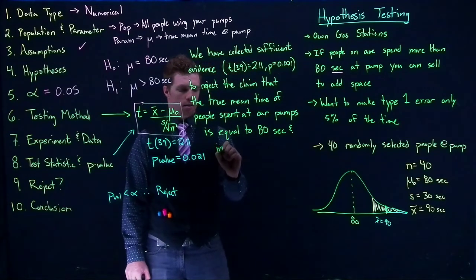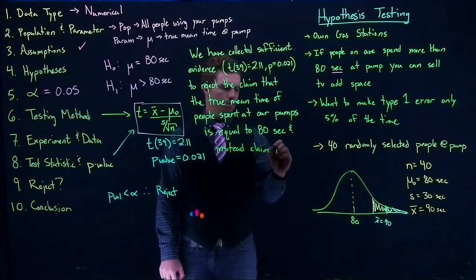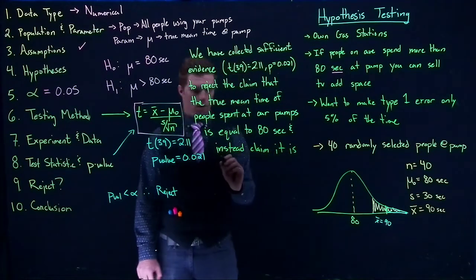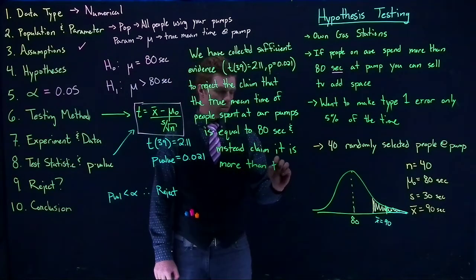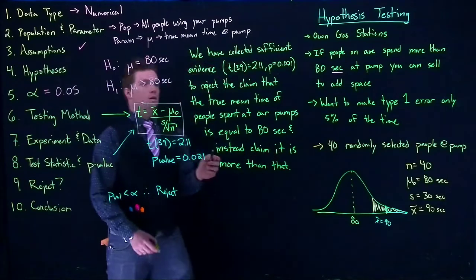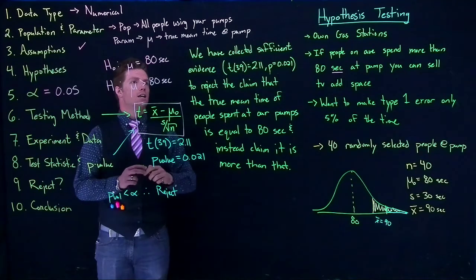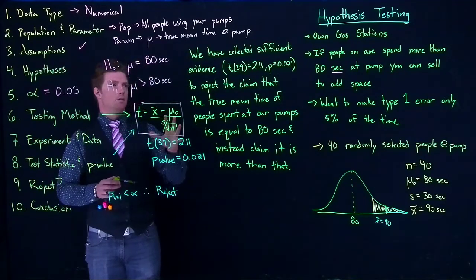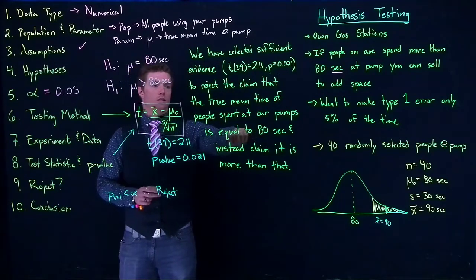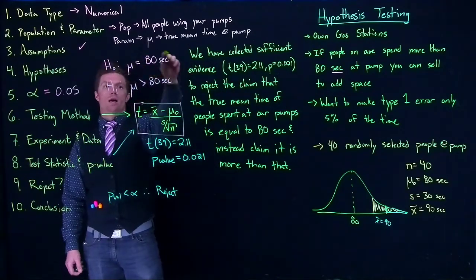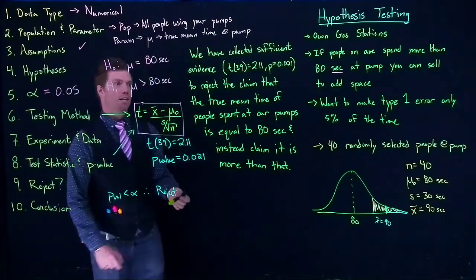And instead we claim it is more than that — that it is greater than 80 seconds. So our conclusion just states that we've rejected the null hypothesis that the true mean equals 80 seconds and instead claim it is greater than 80 seconds.